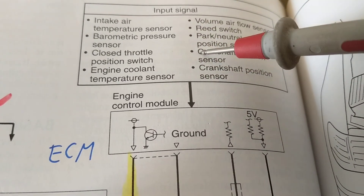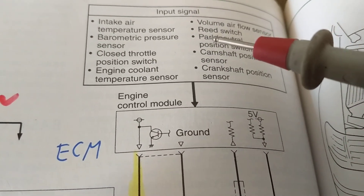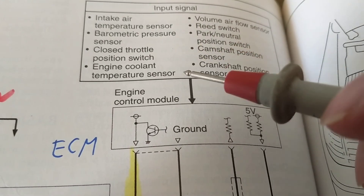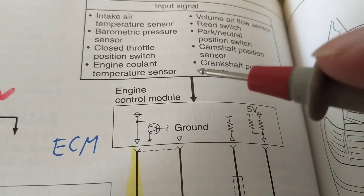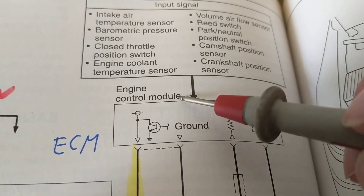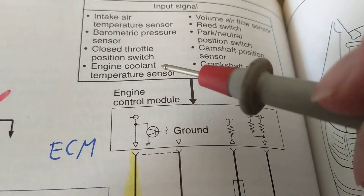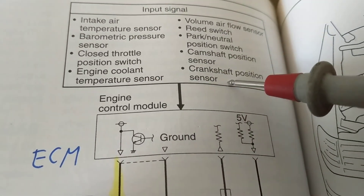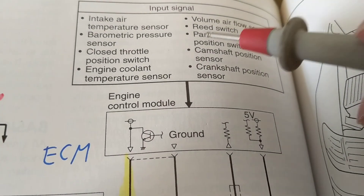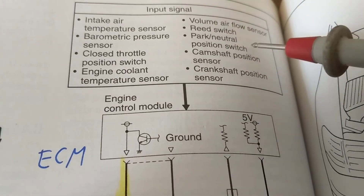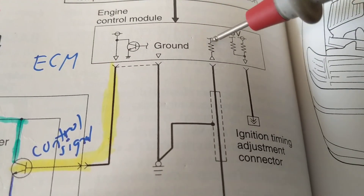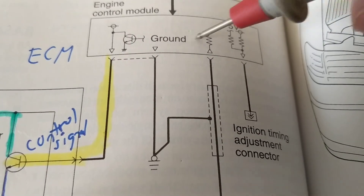All these sensors are inputs giving the present conditions of the engine: the air being drawn in, the temperature of the air, how much air, how much the person is stepping on the gas pedal, the temperature of the coolant in the engine, the crankshaft, the camshaft — whether it's in park, neutral, or idle.